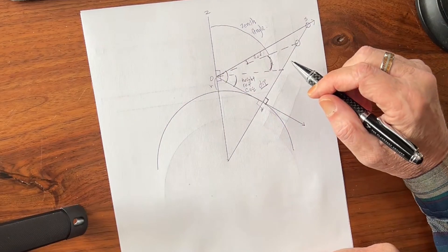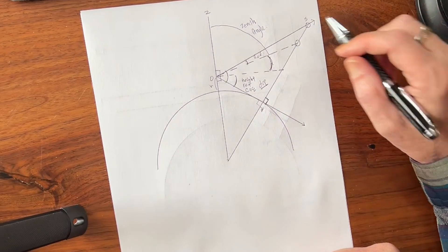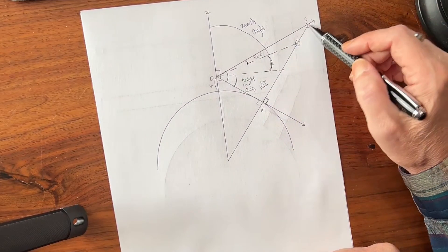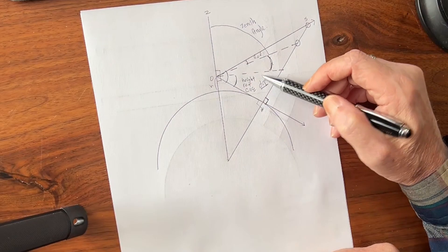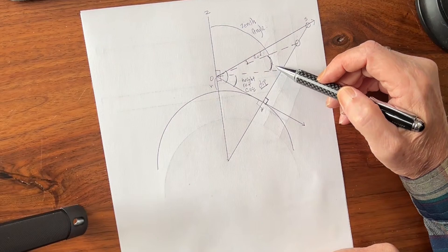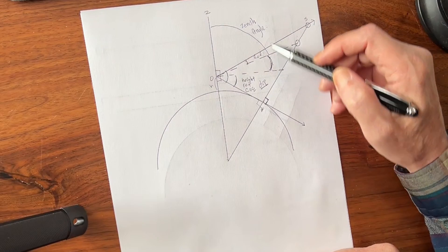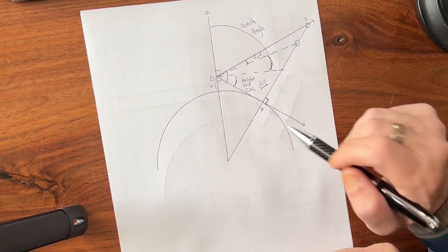The sextant does not measure triangles. It measures a single angle between a star and the horizon, for example. Then we put our corrections in, and we get the corrected angle, and then we subtract that from 90 degrees, and we get our zenith angle, which is what we want.